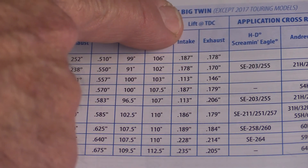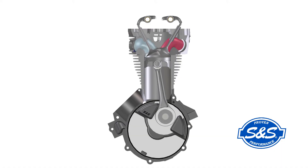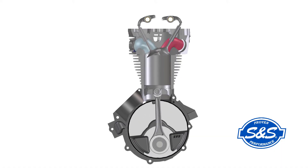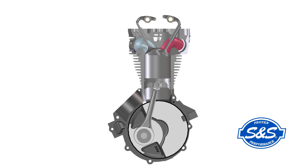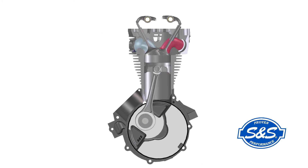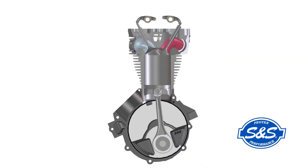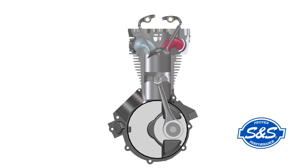Let's start with TDC lift. Top dead center lift, or TDC lift, is very common on cam spec charts. As mentioned in the earlier videos, when the piston is at TDC between exhaust and intake strokes, both valves are open. The TDC lift specification tells us how far each valve is open in thousandths of an inch.